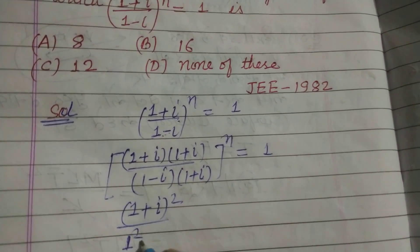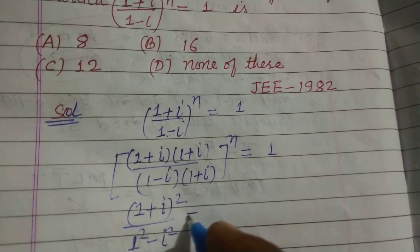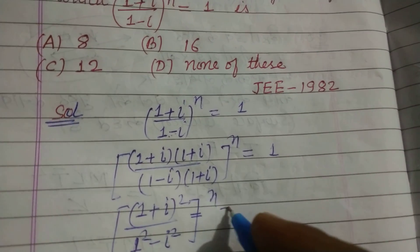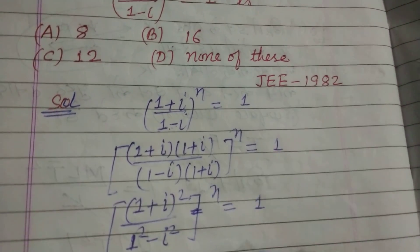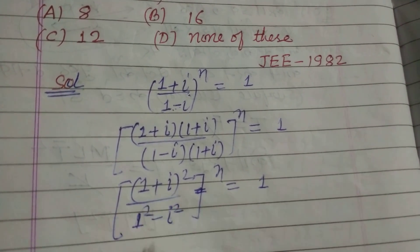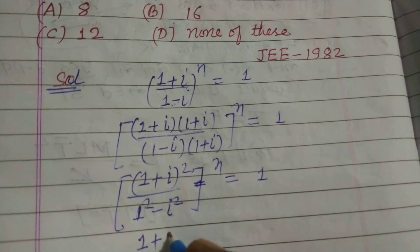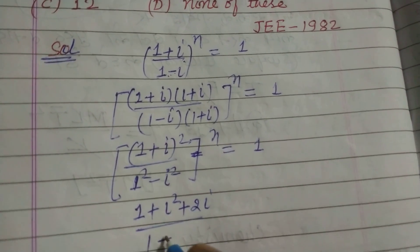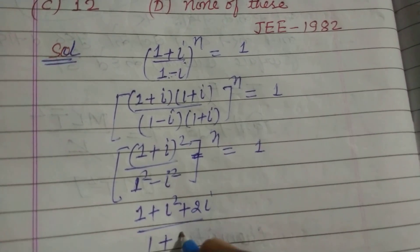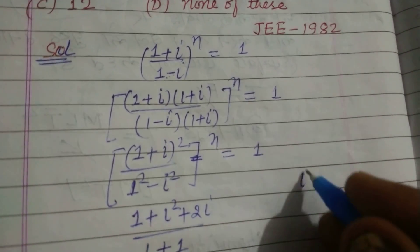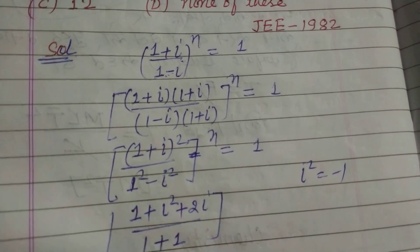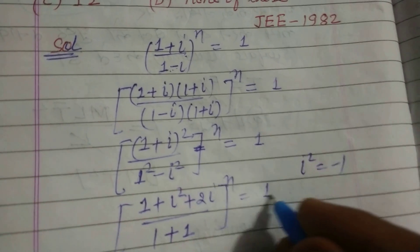This is 1 squared minus iota squared to the power n equal to 1. We open this: 1+iota squared plus 2 iota over 1 plus 1, because iota squared equals minus 1, to the power n equal to 1.